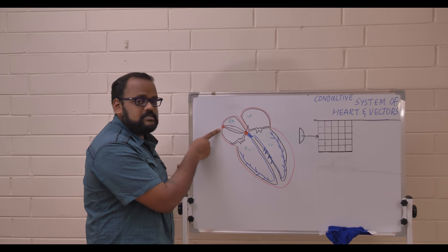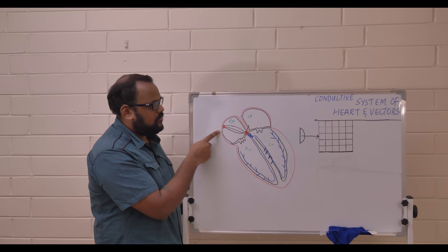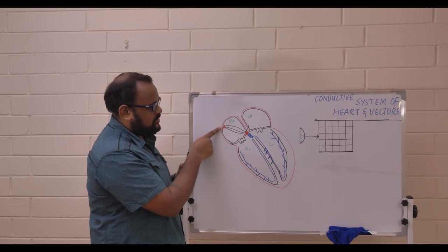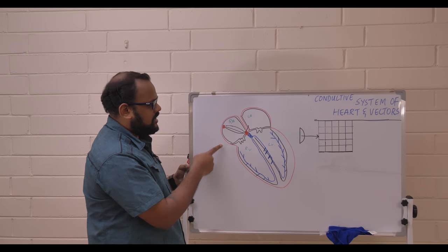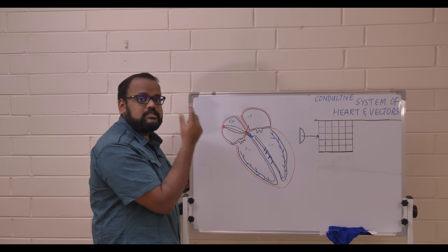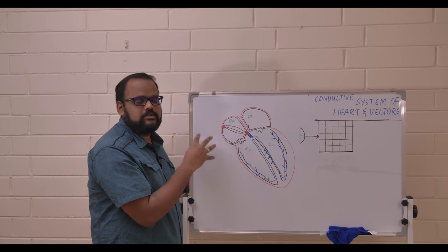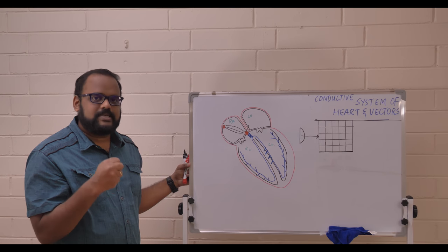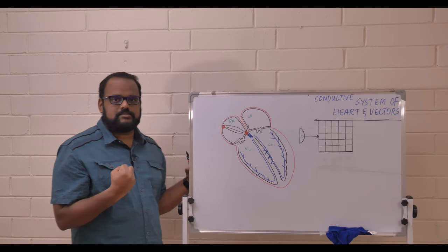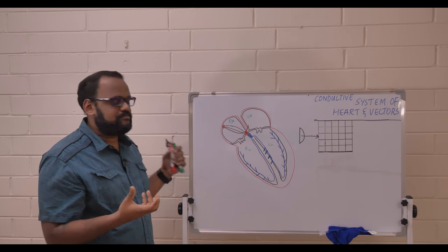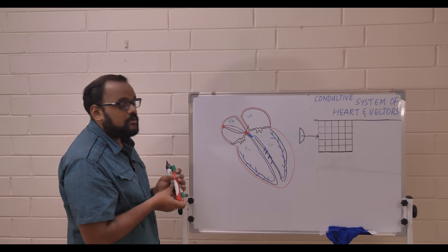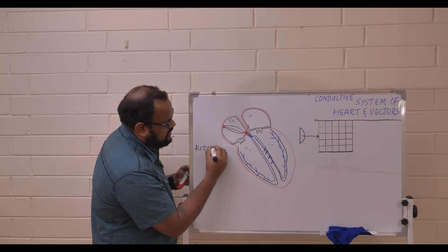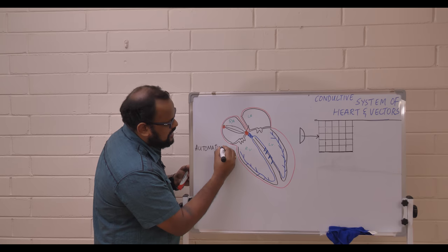Impulses start from the right atrium. At the junction between the superior and inferior vena cava, there is a specialized node called the sinoatrial node. These sinoatrial node cells are cardiac myocytes but they are specialized — they don't contract themselves, but they produce impulses. We call this ability automaticity — the ability of a cell to produce an impulse by itself.